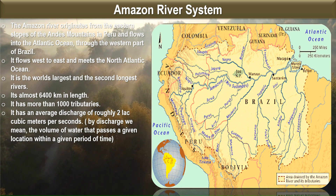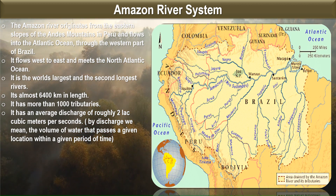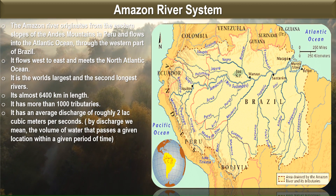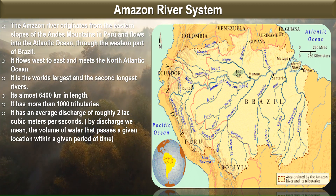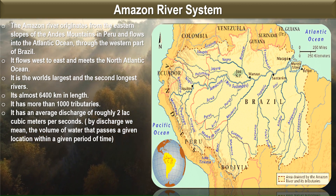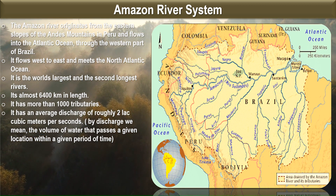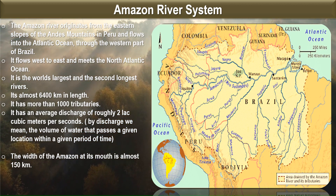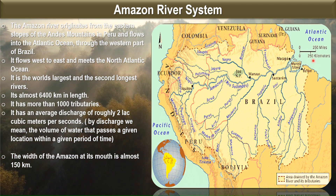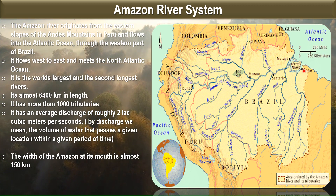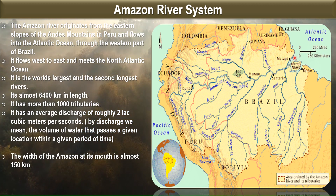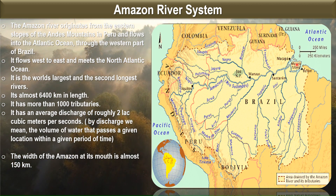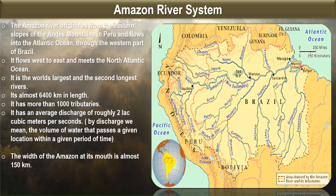The Amazon has an average discharge of roughly 2 lakh cubic meters per second. By discharge, we mean the volume of water that passes a given location within a given period of time — so in one second, 2 lakh cubic meters of water passes through. The width of the Amazon at its mouth is almost 150 kilometers.